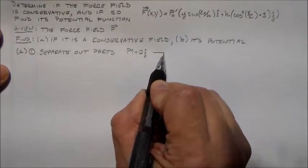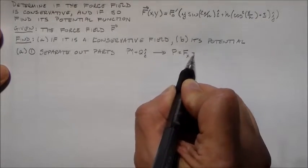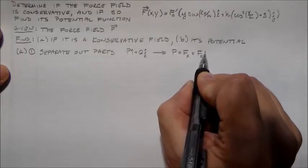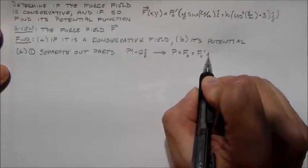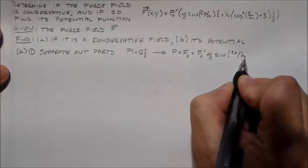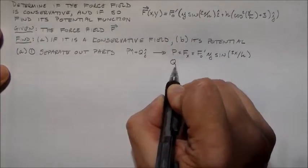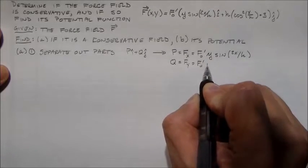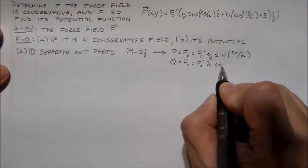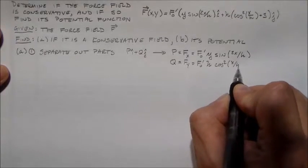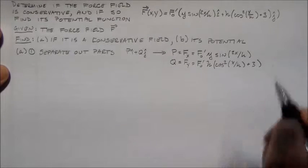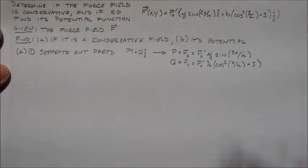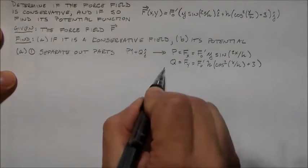Normally for something like this, I just use fx and fy, but this book that we're using uses P and Q. So we want to find the Pi and Qj. So P, which is what I'd normally call fx, is f naught prime times y times sine of 2x over h. Simple. Q is equal to fy usually, which is f naught prime times h cosine squared x over h plus 3. The numbers are just there for fun. I just wanted them there to see how they look later on.